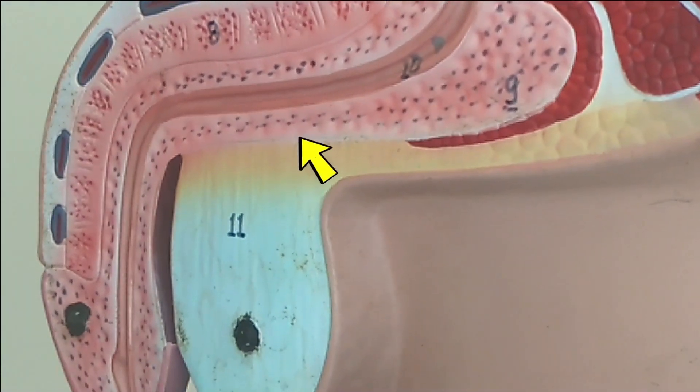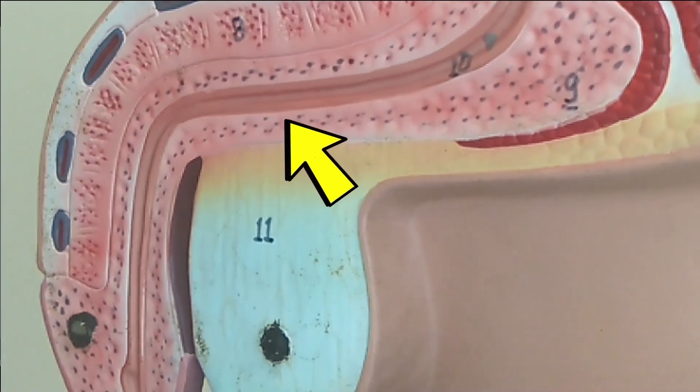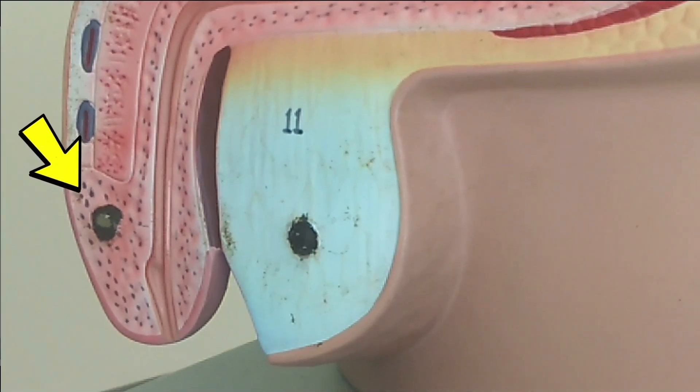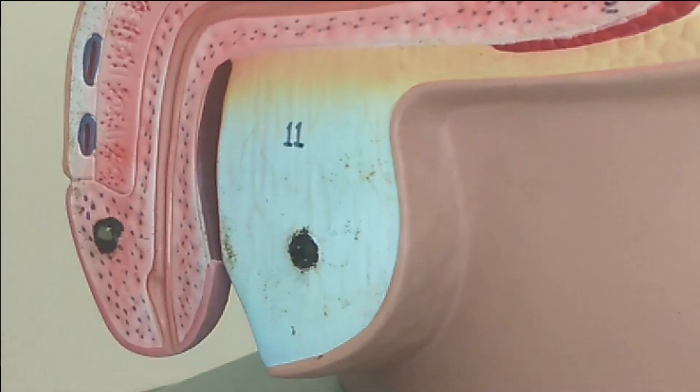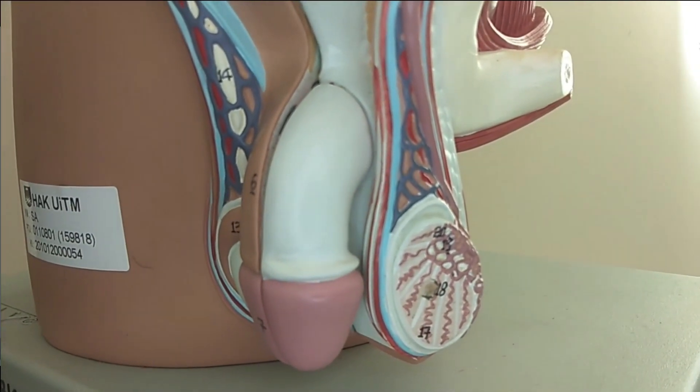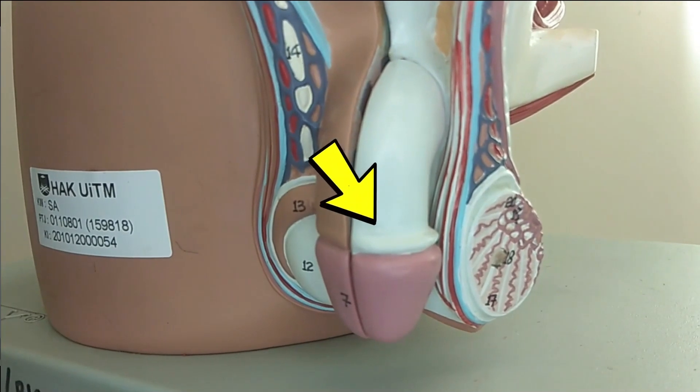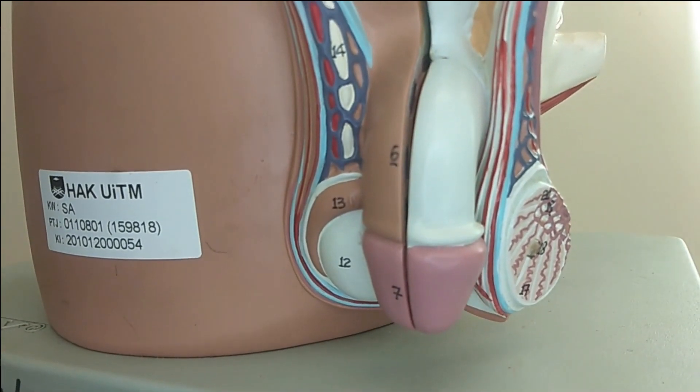The urethra is a tube that conducts urine and semen at different times. The penis contains the urethra as well as three cylinders of spongy erectile tissue. The penis enables sperm to be inserted into the female reproductive organ.